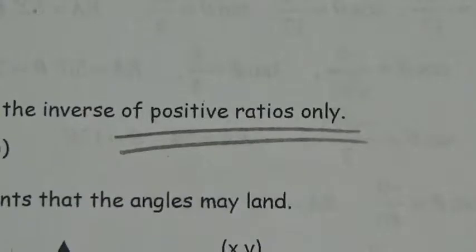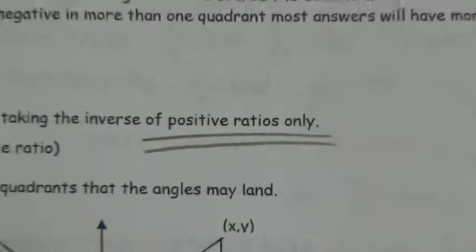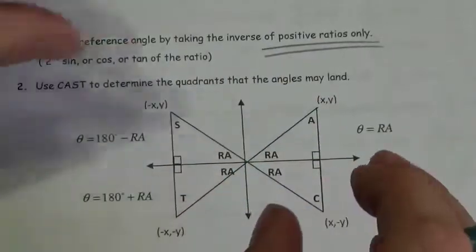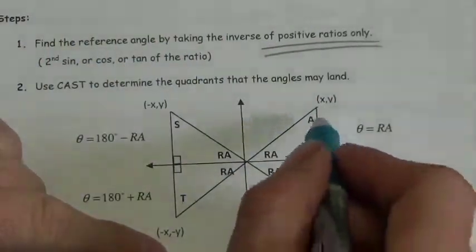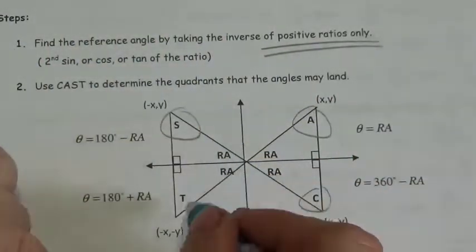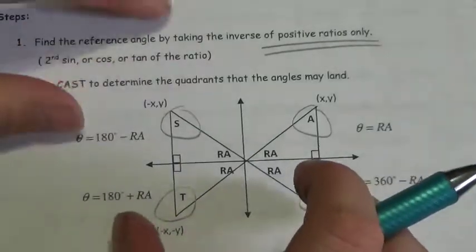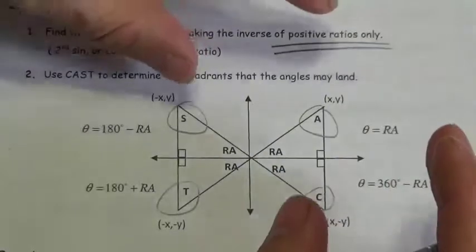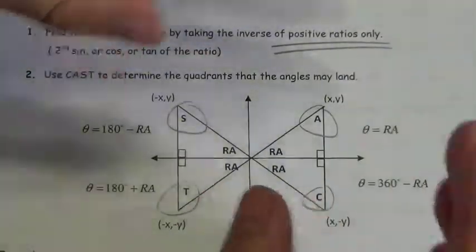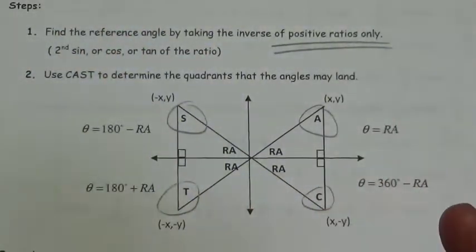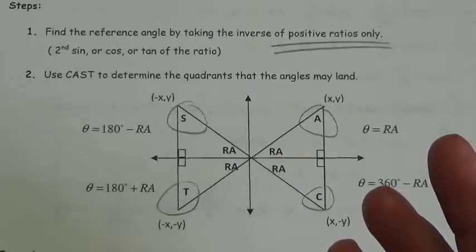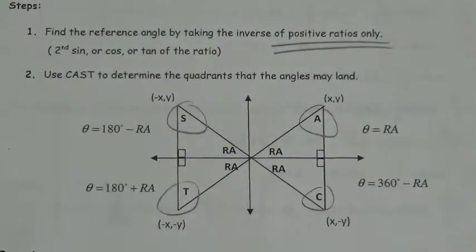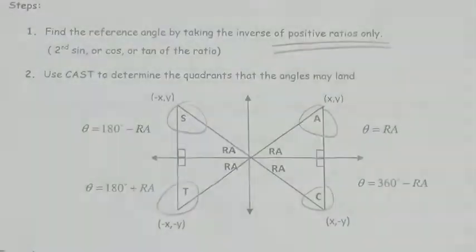Use the negatives to determine what quadrants you're in. Bearing in mind your CAST rule — where cosine is positive, all of them are positive, only sine is positive, only tangent is positive — use that as your guide. When you look at the ratio, figure out what quadrants the answers could possibly be in. In most cases, you're going to have to find two possible answers.